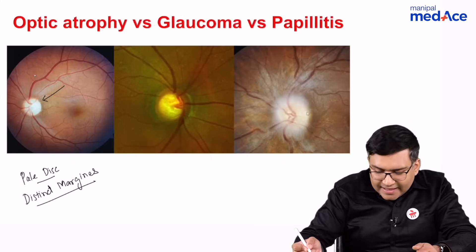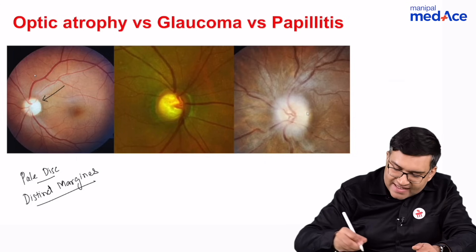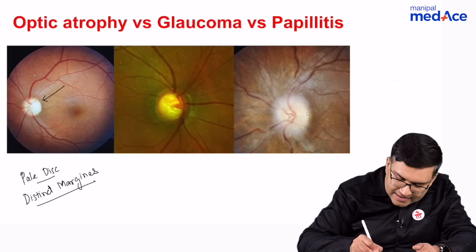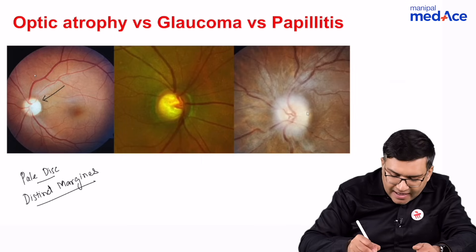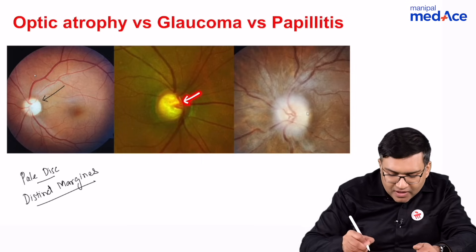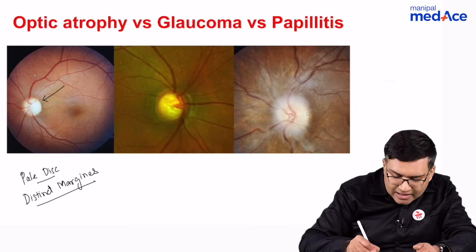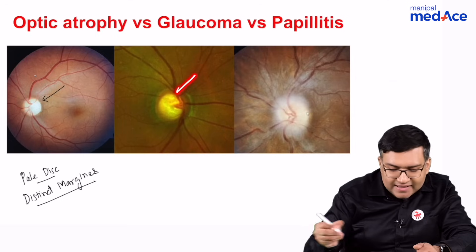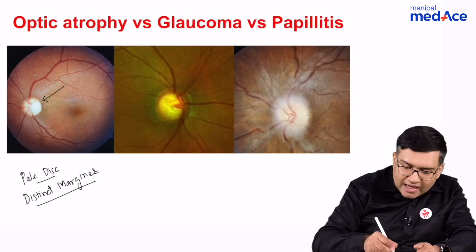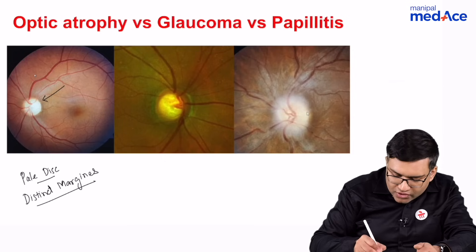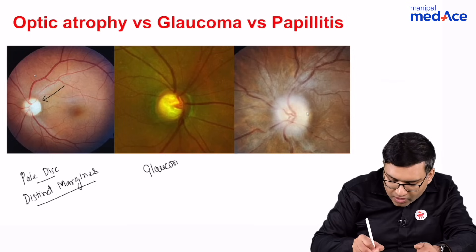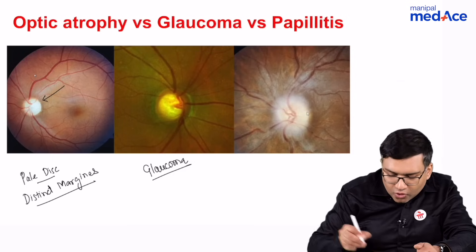Now see the second image. In the second image, what you can see here is there is a large cup and nasalization of vessels with a bayonating sign. So all these are pointing towards the diagnosis of glaucoma.